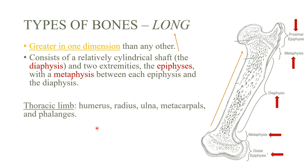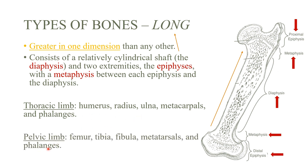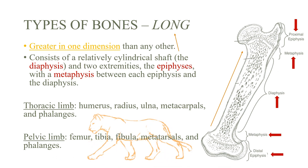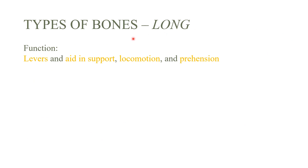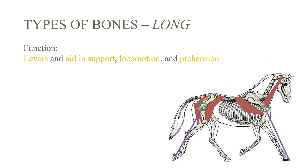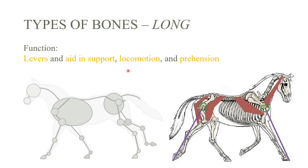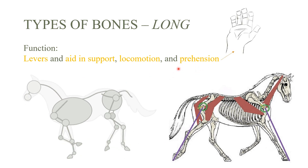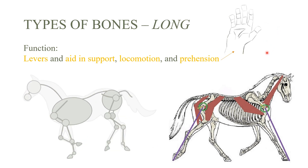Everything in the thoracic limb and the pelvic limb is mainly long bones, apart from sesamoid bones and the bones in the joints. The functions of long bones include acting as levers and aiding in support, helping the animal stand on its feet. They also help with locomotion — helping animals stand up and lie down — and prehension, which is mostly for primates, helping to hold things.